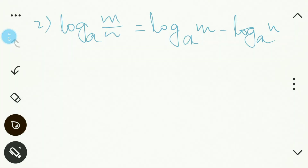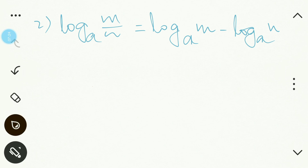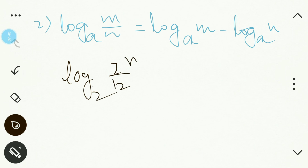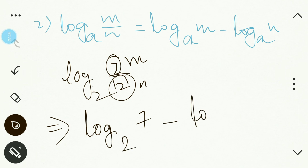The second law deals with division. Log (m/n) to the base a equals log m to the base a minus log n to the base a. You subtract the denominator's log from the numerator's log with the same base. For example, log (7/12) to the base 2 becomes log 7 to the base 2 minus log 12 to the base 2.